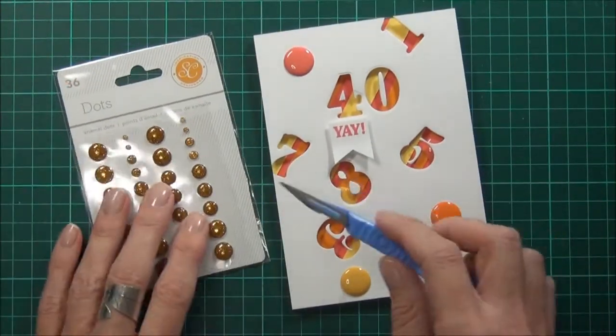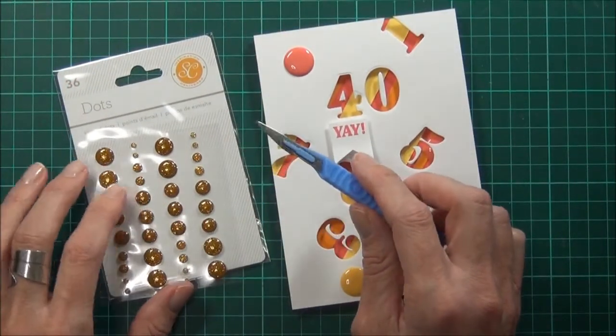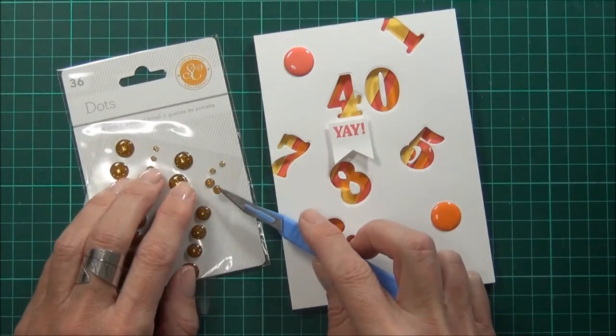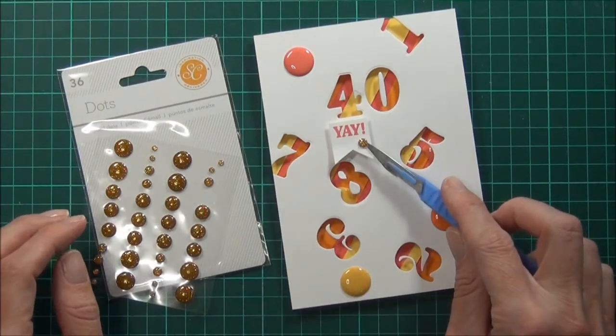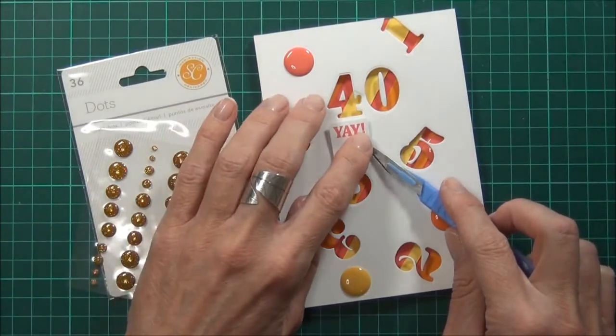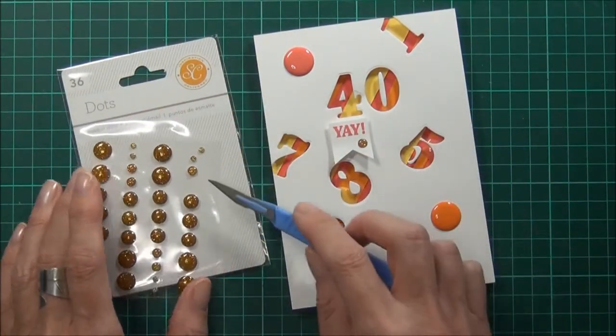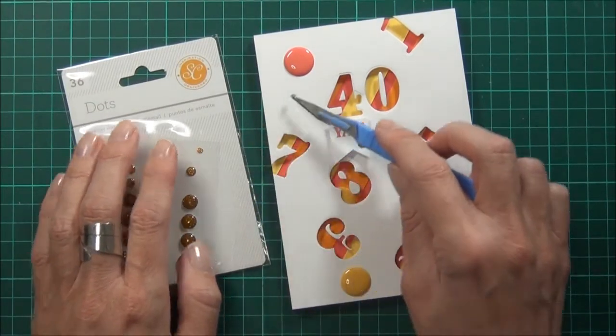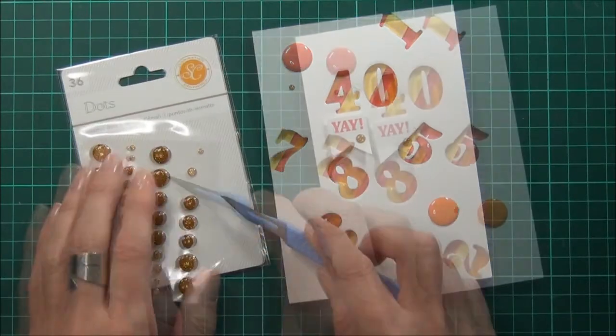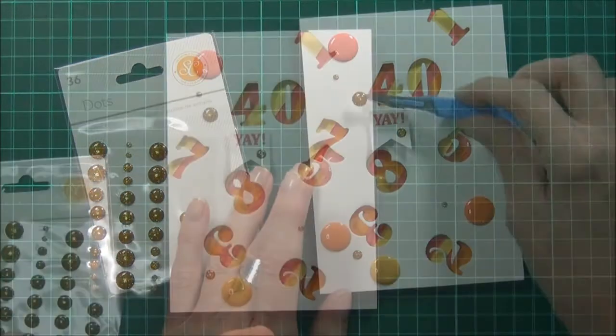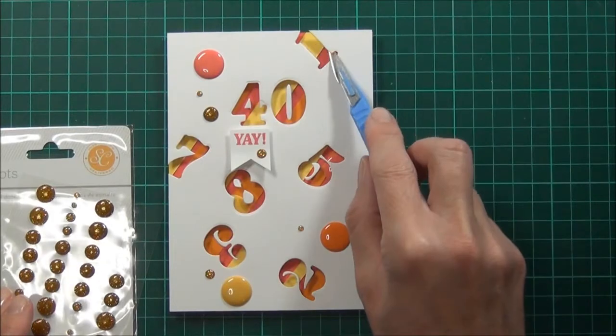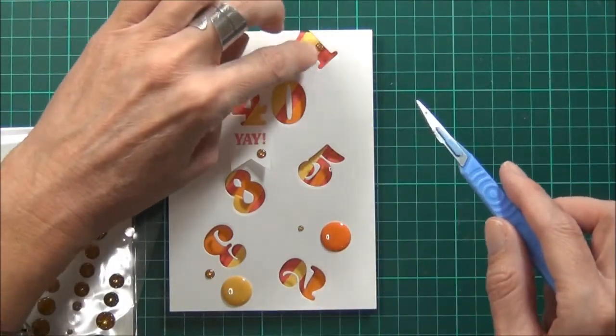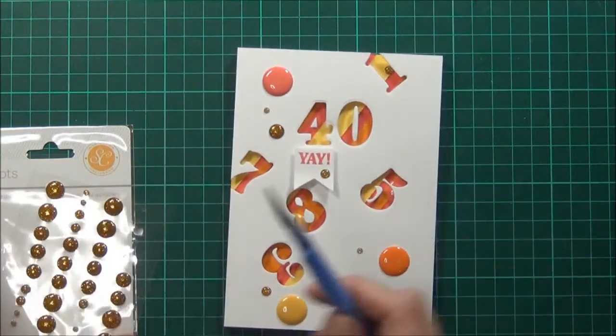Just add a little bit of bling. I have some Studio Calico. These are some more enamel dots and these ones are really sweet. They're like a gold bling. I've got one in that one and I'm done.